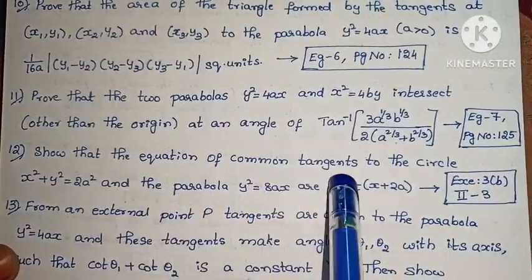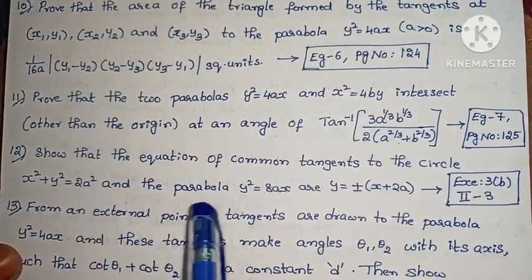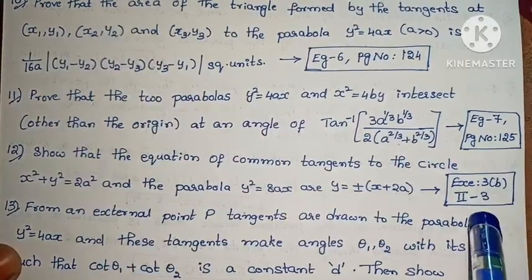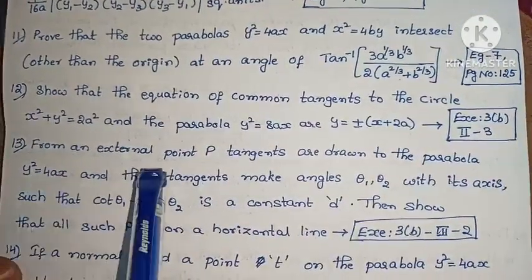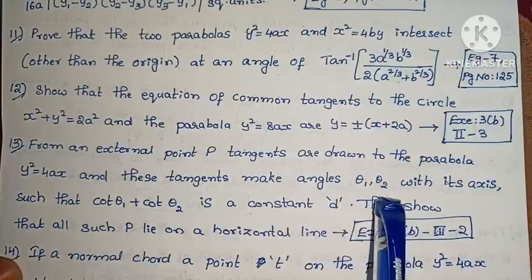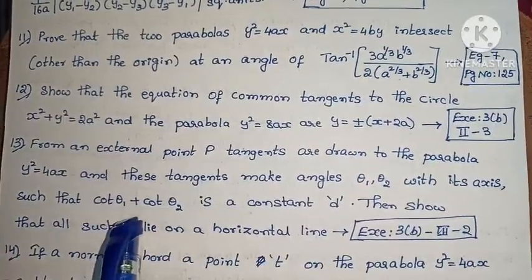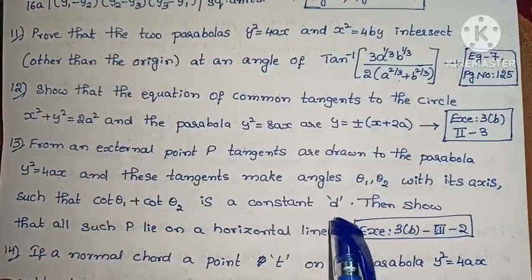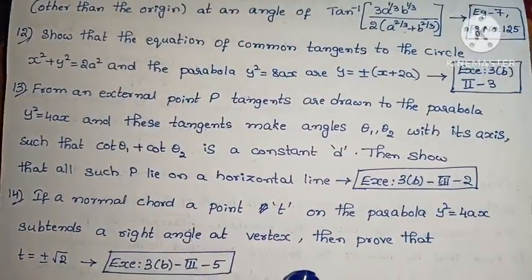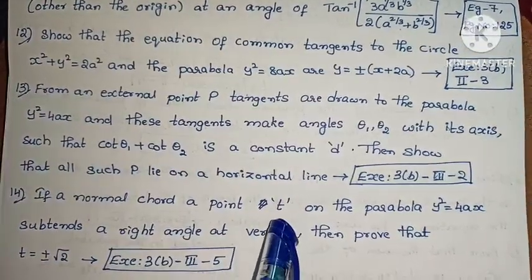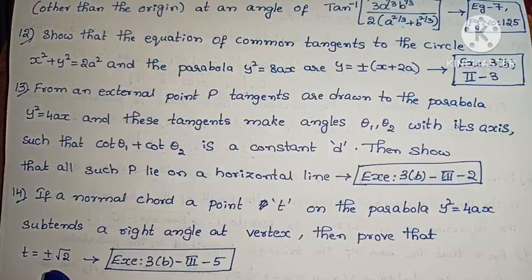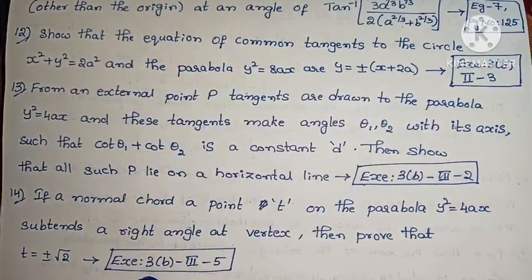Next, show that the equations of the common tangents to the circle x² + y² = 2a² and the parabola y² = 8ax are y = ±(x + 2a). Exercise 3, second roman, third problem. Next, from an external point P, tangents are drawn to the parabola y² = 4ax and these tangents make angles θ₁, θ₂ with its axis such that cot θ₁ + cot θ₂ is a constant d. Then show that all such P lies on a horizontal line. Exercise 3, third roman, second problem. Next, if a normal drawn at a point t on the parabola y² = 4ax subtends a right angle at the vertex, then prove that t = ±√2. Exercise 3, third roman, fifth problem.